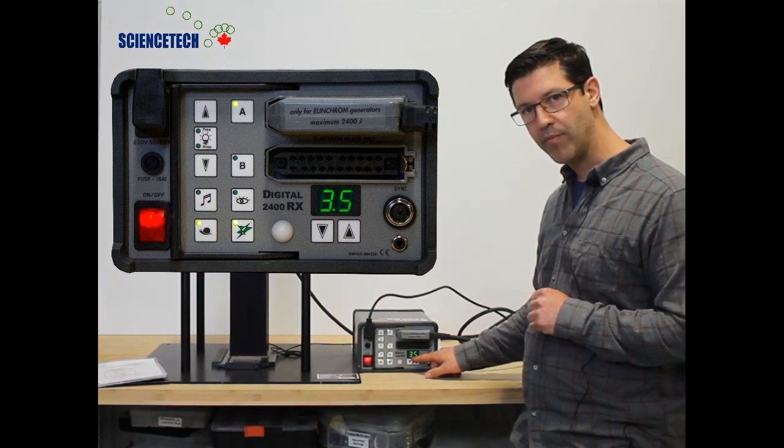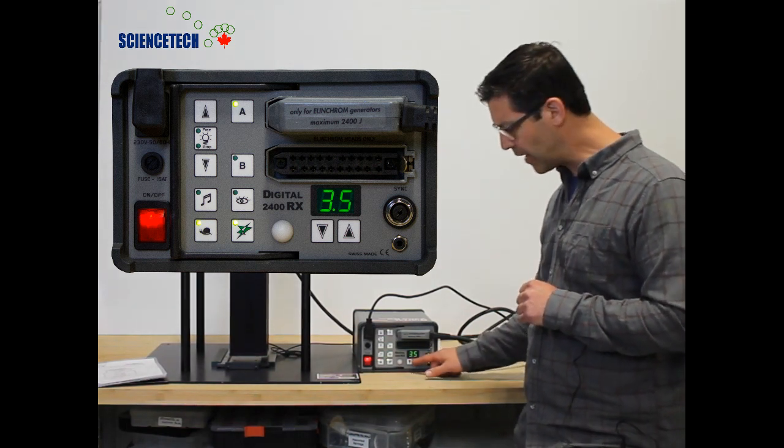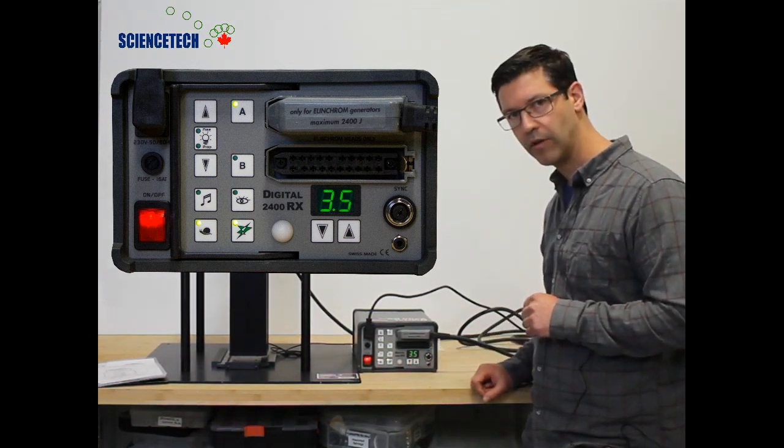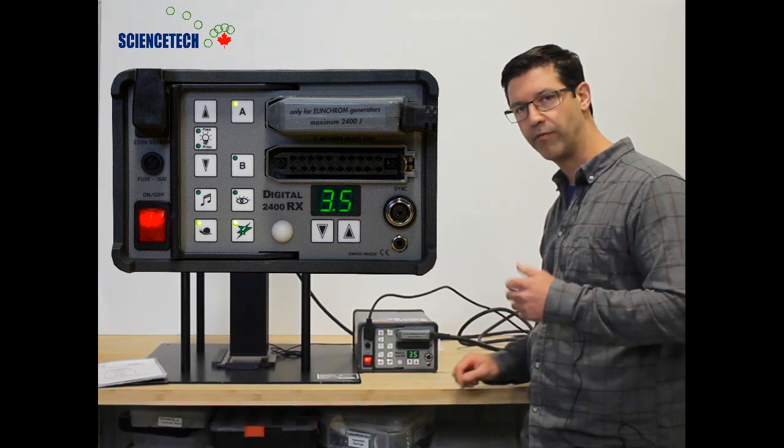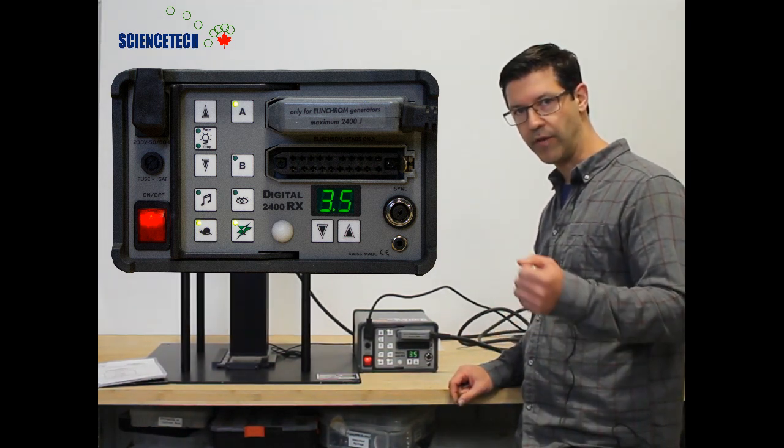Here you can see the number is 3.5. That's the lowest possible level on the power supply. It actually refers to a photography f-stop.